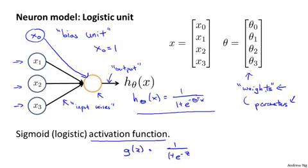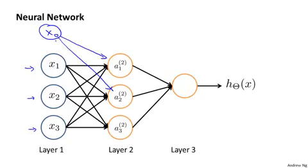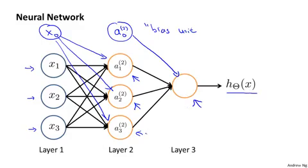That little diagram represents a single neuron. A neural network is just a group of these different neurons strung together. Concretely, we have input units x1, x2, x3 — and sometimes an extra bias node x0. Here we have three neurons labeled a21, a22, a23, and optionally an a0 bias unit. Finally, there is a third node at the final layer that outputs the value that our hypothesis h(x) computes.